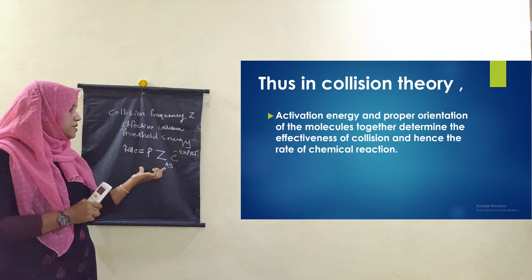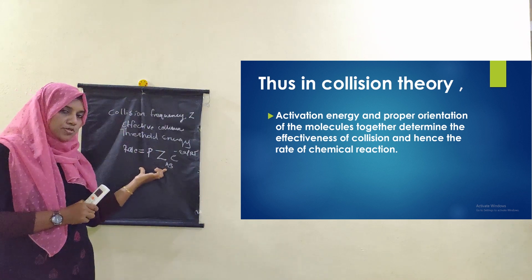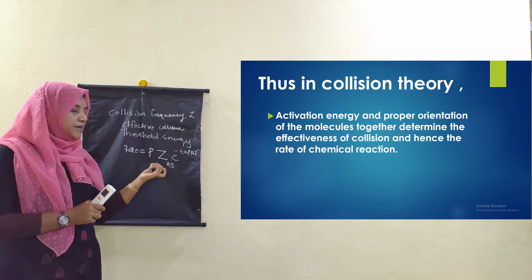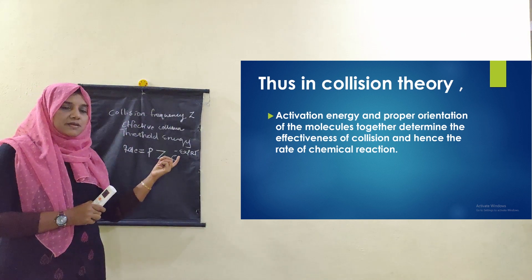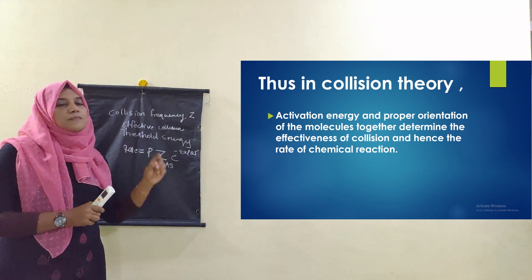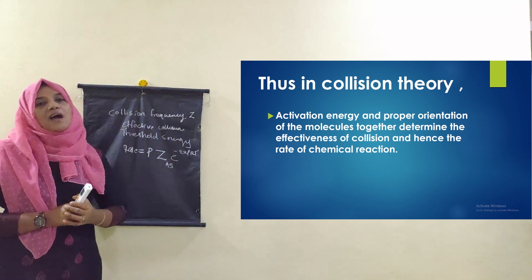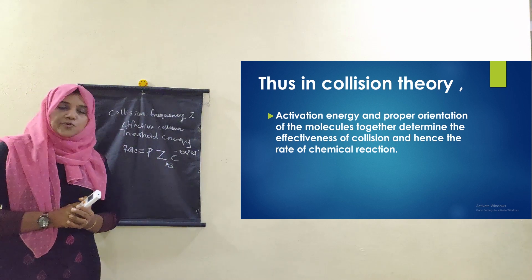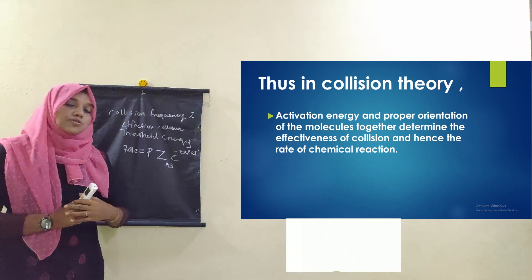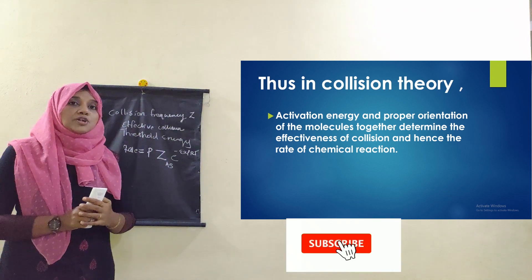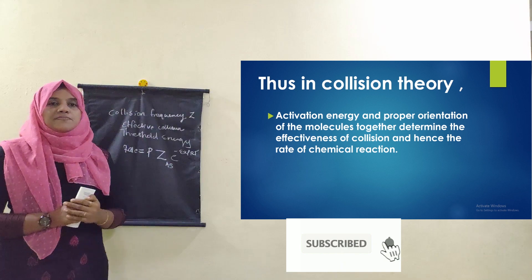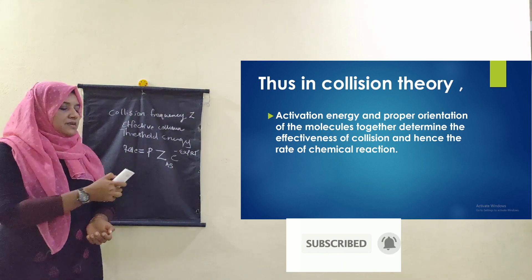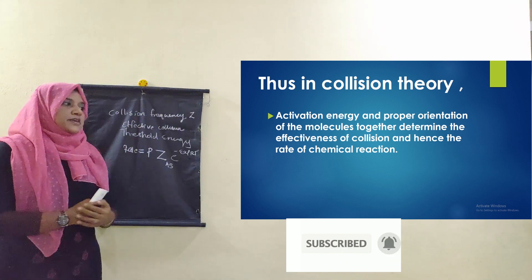The rate is equal to PZ_AB raised to minus Ea by RT. This is chemical kinetics. Thank you.